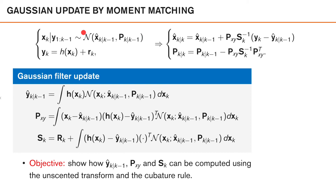We assume that the predicted density is Gaussian with this mean and this covariance, and that we have a nonlinear measurement model with additive Gaussian noise. The posterior moments are given by these equations. The key difficulty is to approximate the cross-covariance P_xy, the predicted measurement y-hat k|k-1, and the predicted measurement covariance S_k. What remains to compute are expected values over the random variable x_k, where x_k is Gaussian distributed with this mean and covariance. This is precisely the type of expectation that the sigma point methods are designed to compute.